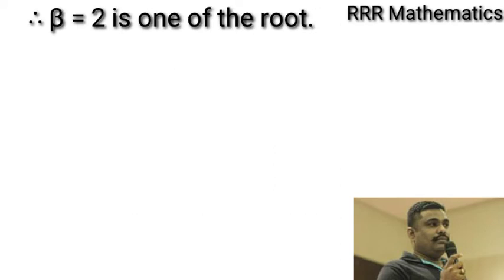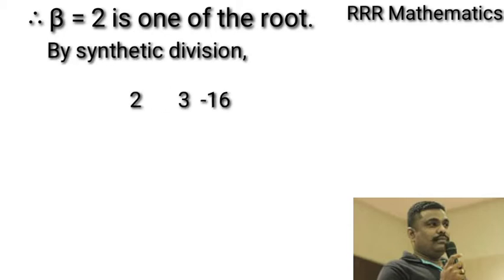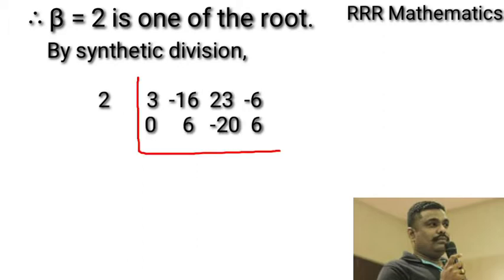In this case, +1 and -1 do not satisfy. Therefore, by synthetic division, I will check by 2: 3, -16, 23, -6. It gives 0, 6, -20, 6. Finally, 6 and -6 cancel, giving 0.